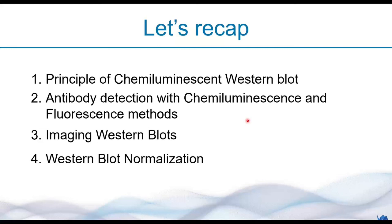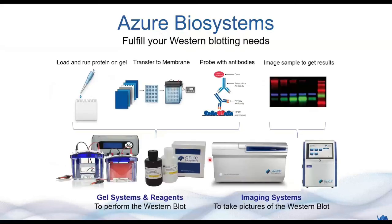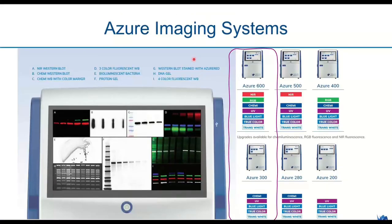Let's recap what we have covered today: the principles of chemiluminescence western blot workflow, the two major antibody detection methods — chemiluminescence and fluorescence western — imaging western blot including X-ray film limitations and CCD cameras, and the two major normalization methods — housekeeping protein and total protein normalization. Azure Biosystems offers a range of western blotting reagents and imaging systems including the Sapphire Biomolecular Imager and the Azure Imaging Systems. For chemiluminescence detection, we have the Azure 300, and our highest-spec system is the Azure 600, which supports near-infrared and RGB fluorescence as well as chemiluminescence.